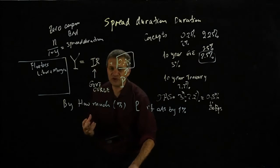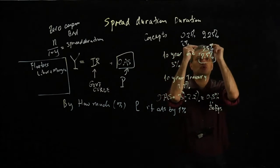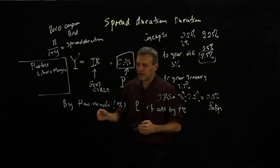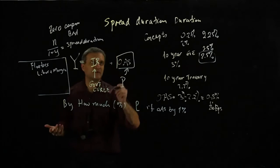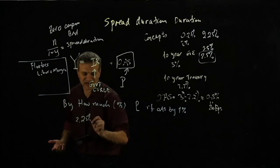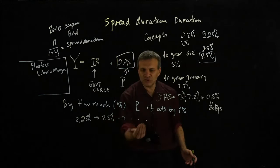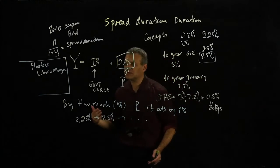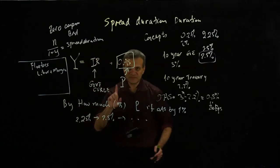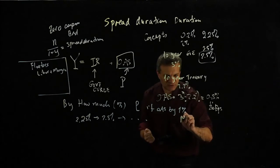You can think about the floater in the following way: every three months you issue a bond with a new coupon, and this coupon is going to depend on the LIBOR as it is now. So basically today I'm issuing a three-month bond, then in three months I'm issuing another three-month bond, etc. But the maturity of those bonds — the actual maturity — will be the maturity of the floater, and that's the key.